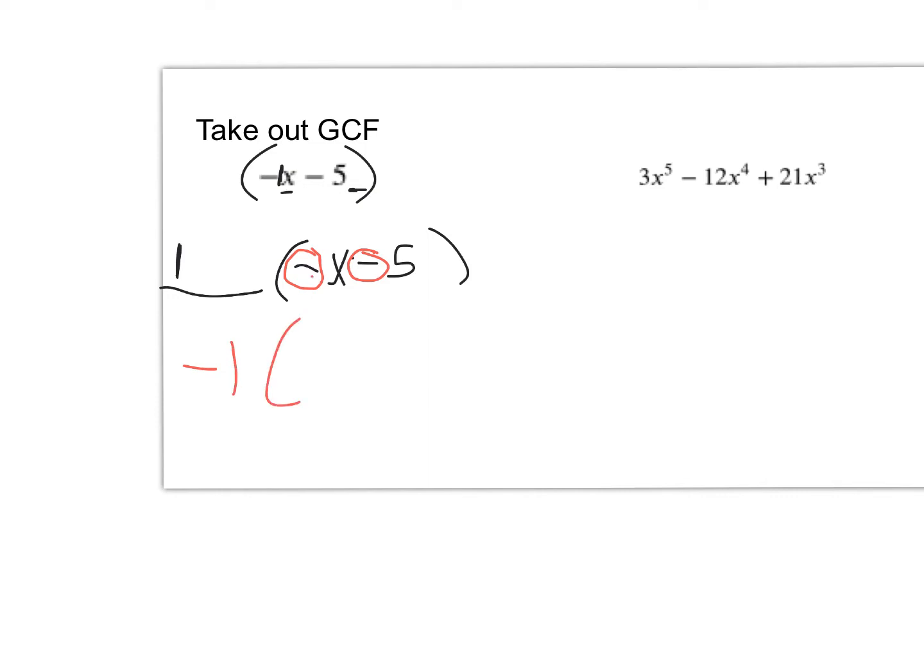So when everything is negative like that, you can take a negative 1 out. And by doing that, that changes those signs over to x plus 5. Because again, remember, when you take the GCF, it's just like you're dividing. So negative x divided by negative 1 is positive x. Negative 5 divided by negative 1 is positive 5. So watch out for stuff like that. Kind of like I tell my students, if your lead term is negative, we don't like that when we factor. It's safe to take out the negative 1 if that's like that.